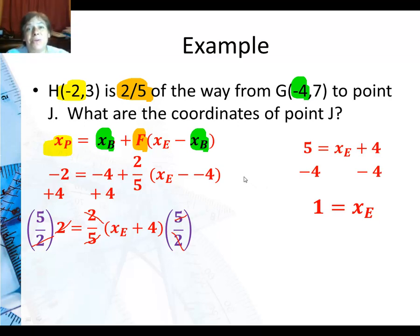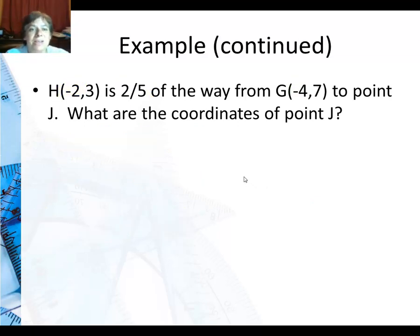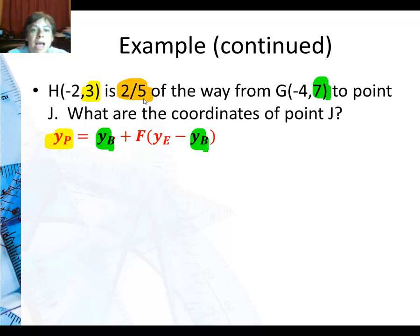Now we have to do this all for y. So same thing, similar formula. There's my beginning and end and beginning. This is my partway point for the y-coordinate, so that's going to go here. Then I have the beginning point for the y-coordinate, so that goes here and here. I know the fraction. That goes there. I'm looking for this.